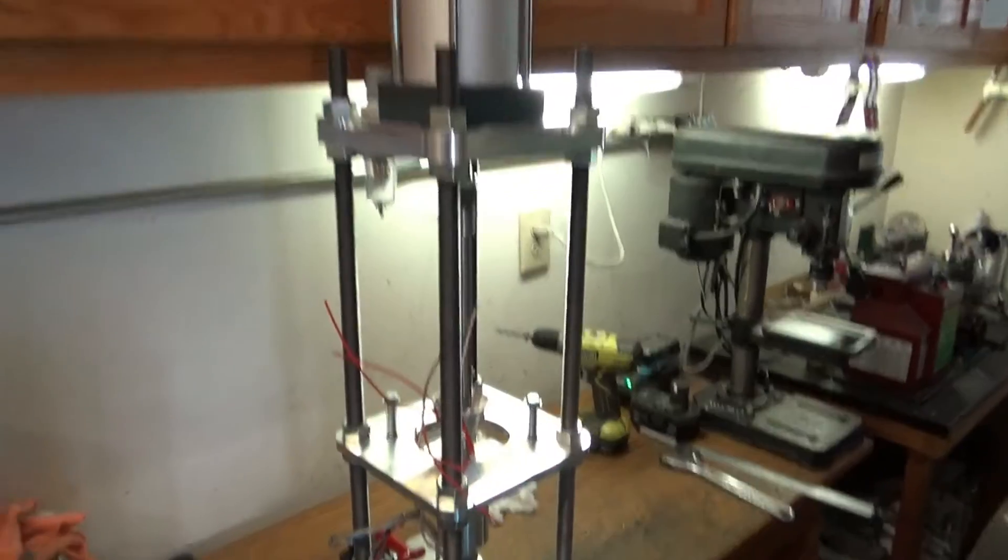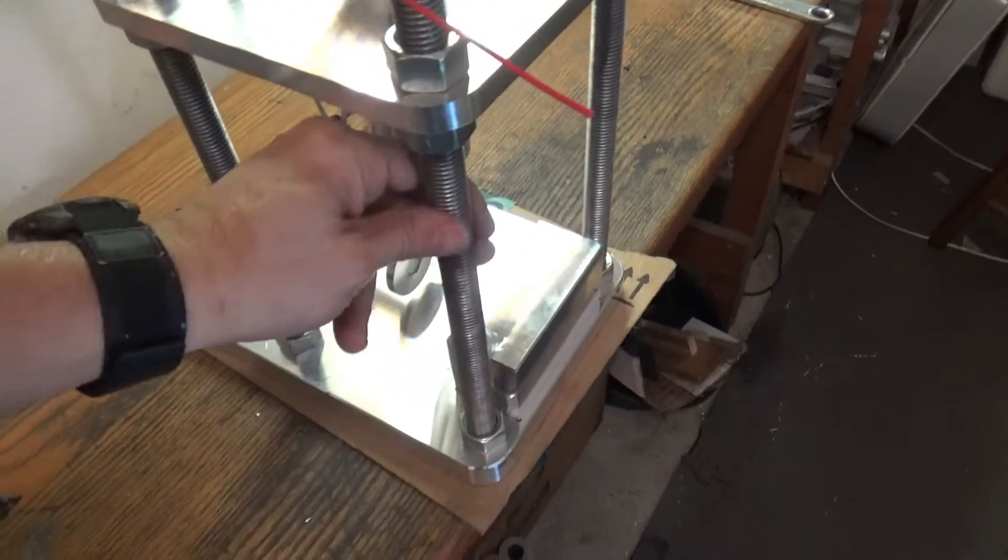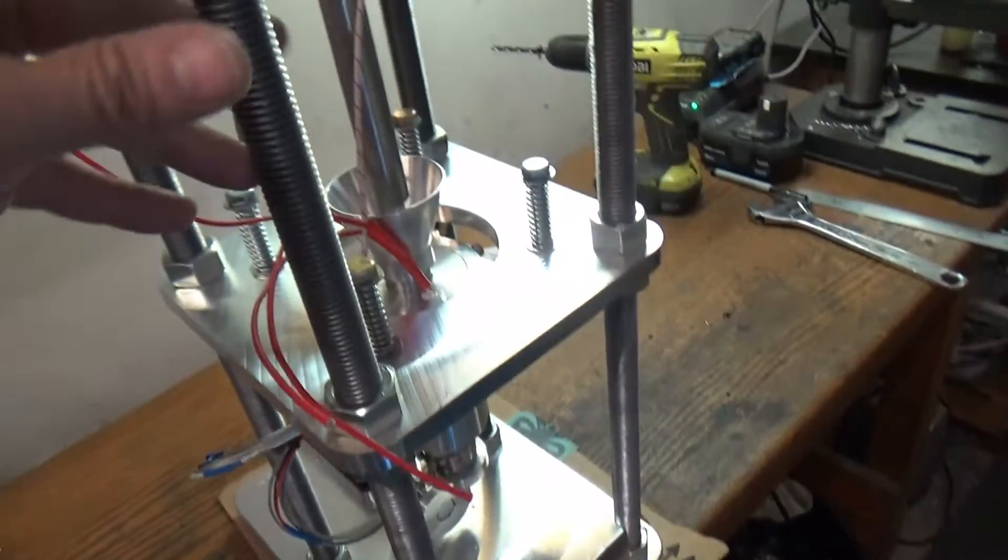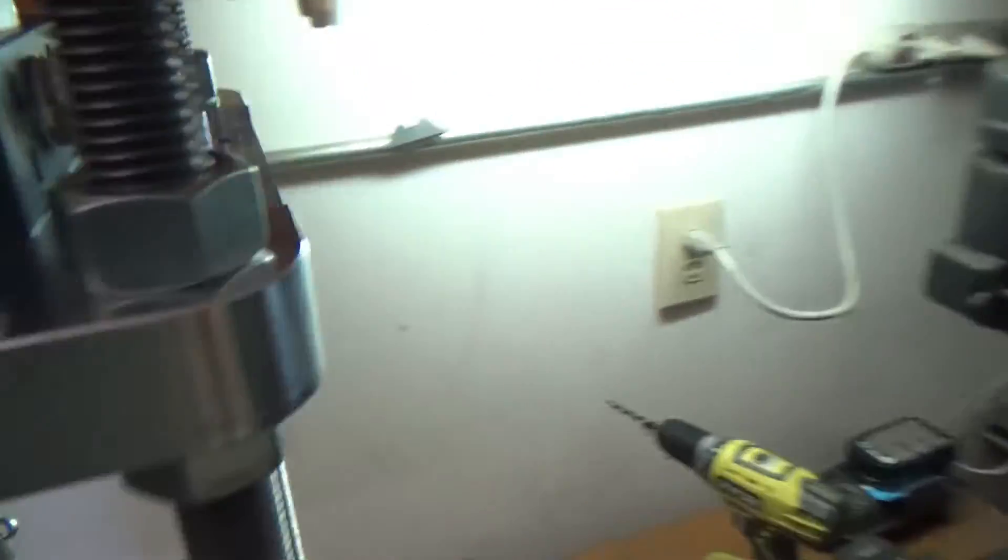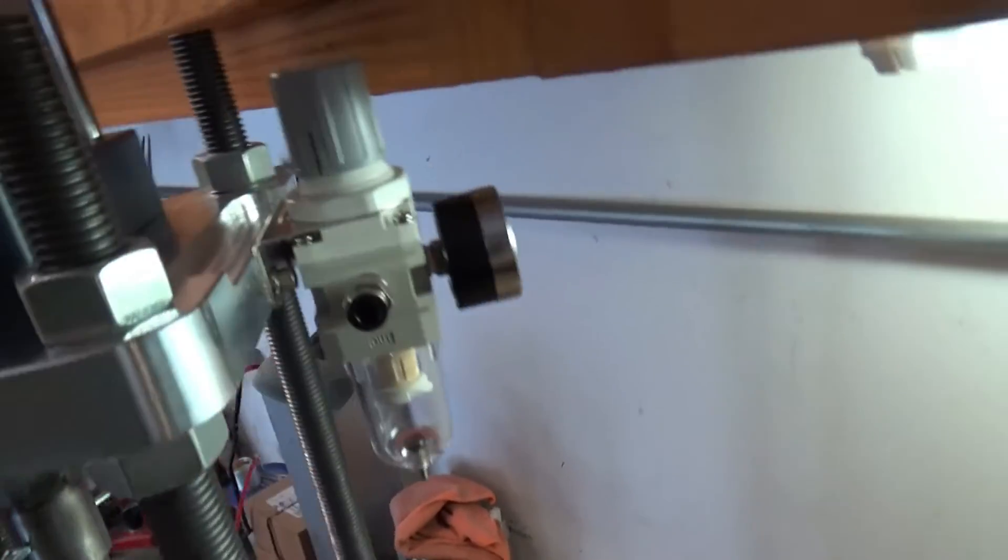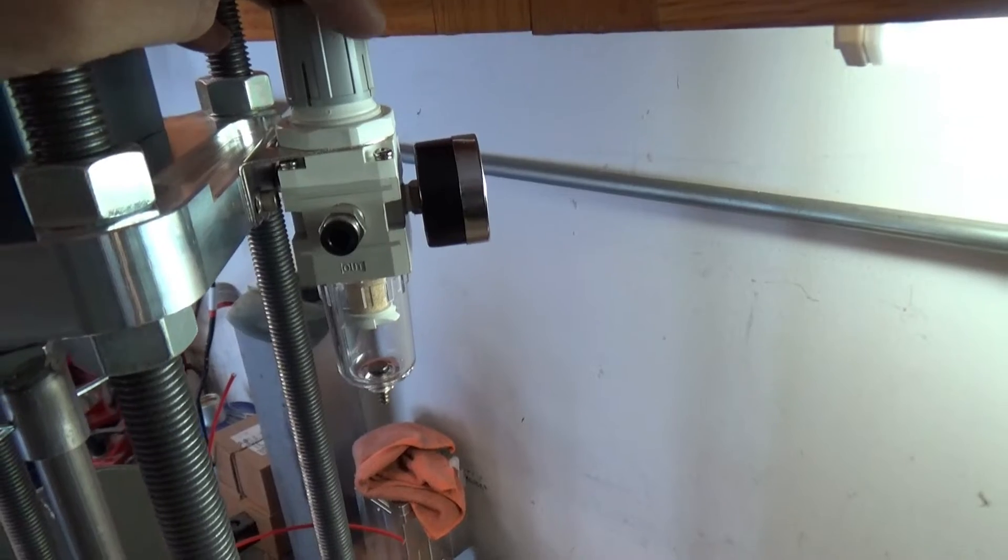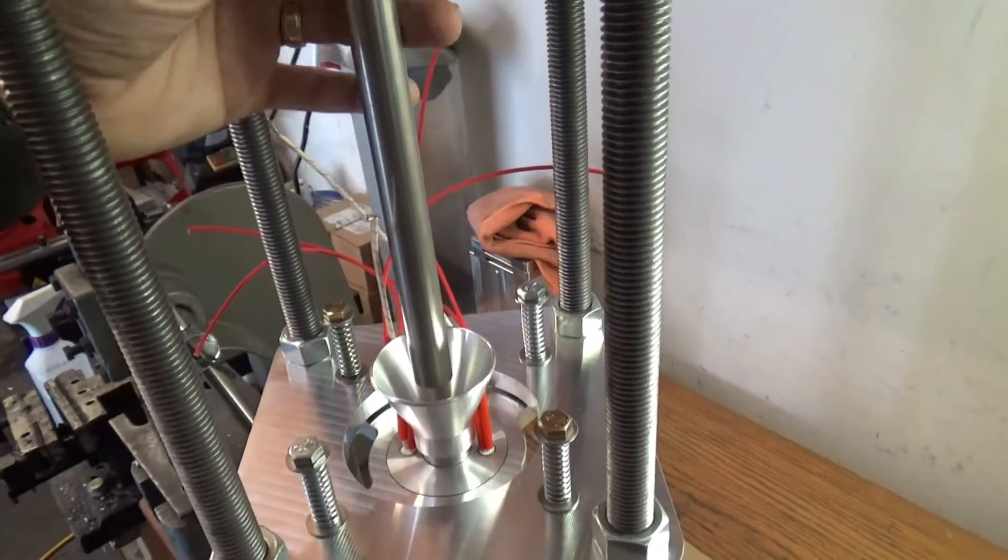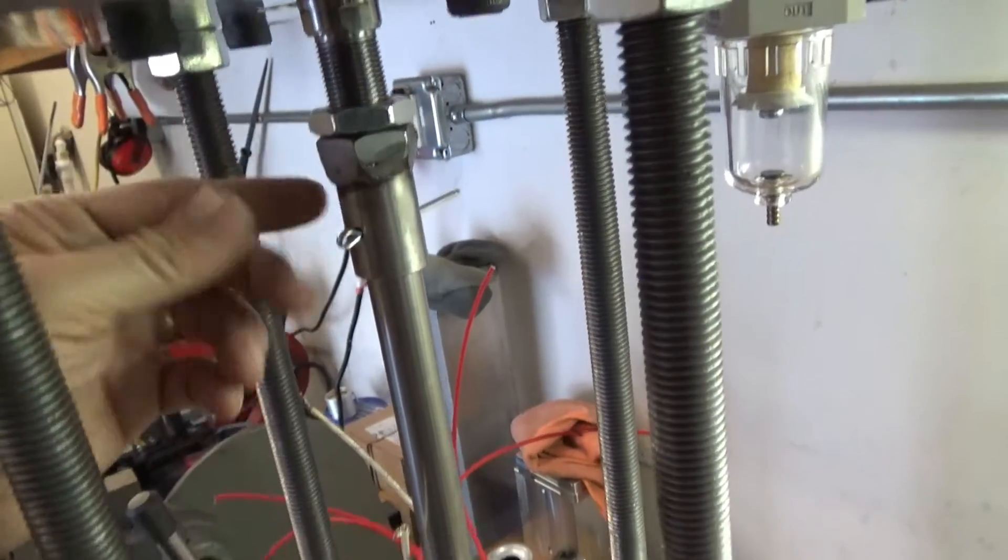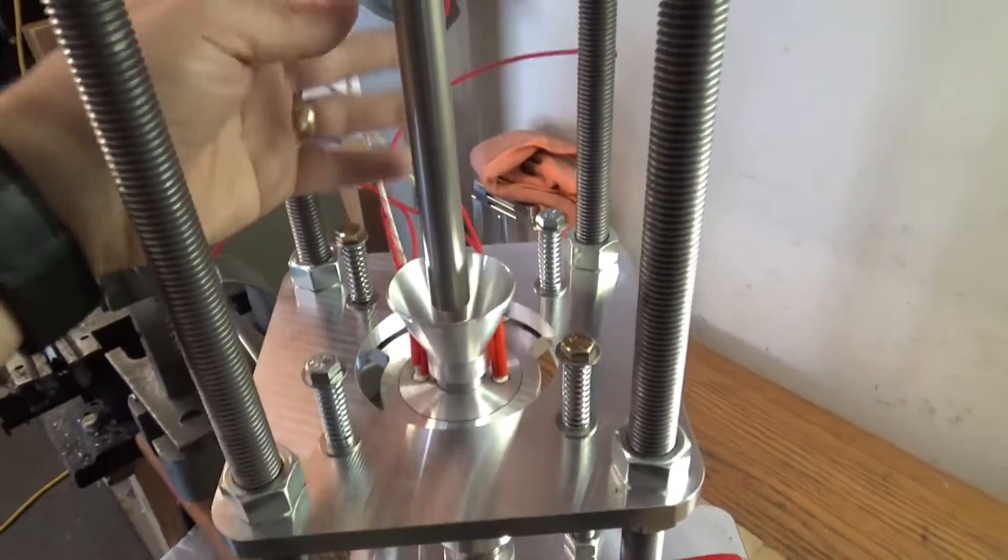All right, well you can see I've been doing some assembling. We've got our bottom plate, our threaded rod assembled, our top plate on with our air cylinder, and my air valve mounted here in the back. We've got our piston here, and it's mounted.